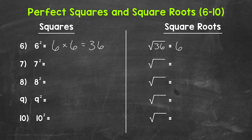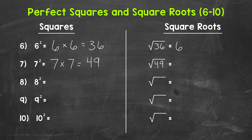Let's move on to number seven, where we have seven squared. That means seven times seven, which equals 49. So seven squared equals 49, and that means the square root of 49 equals seven.